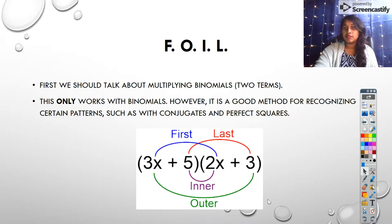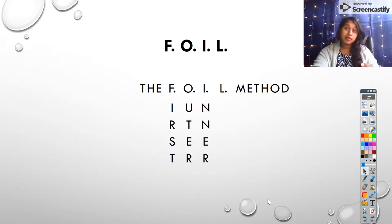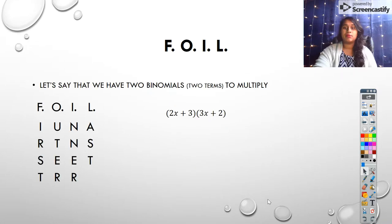Here's a visual representation of what that looks like: first, outer, inner, and last. I'm going to give you one more visual representation. So what does FOIL mean? First term, outer terms, inner terms, and the last terms of your binomials.